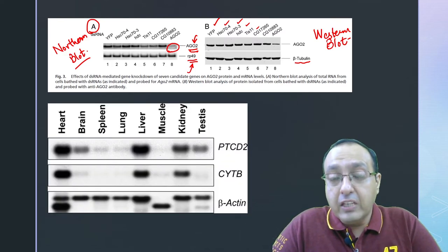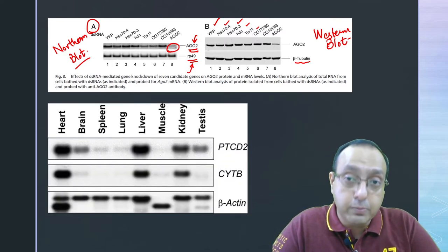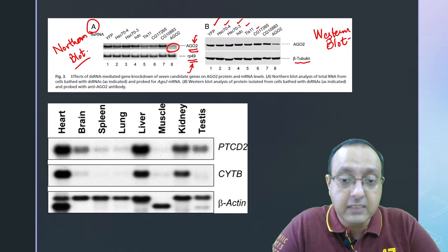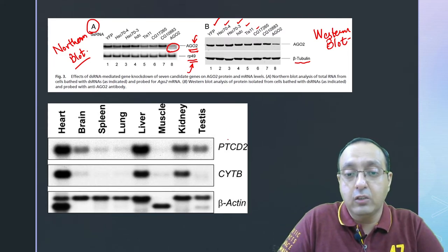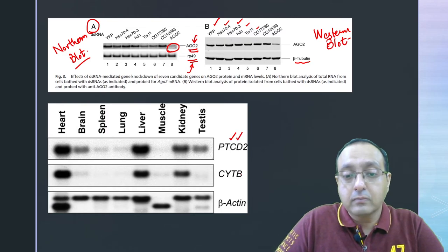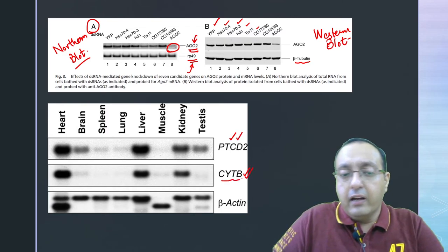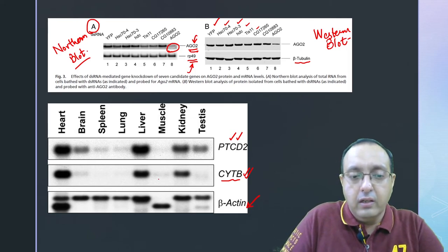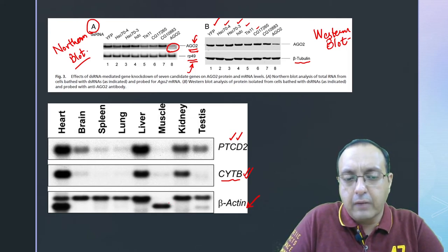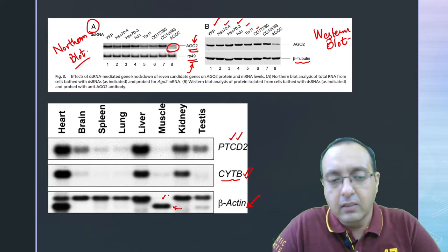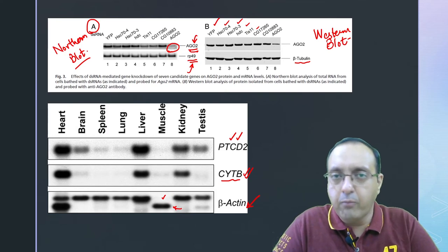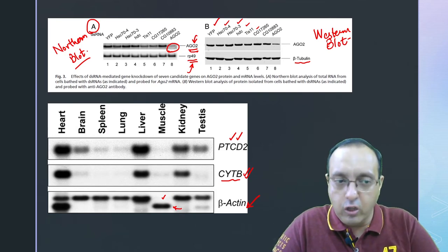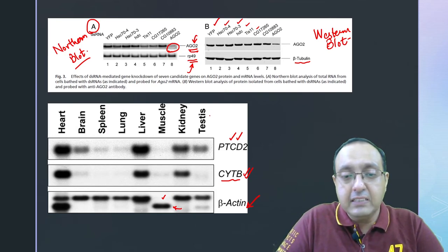Another application of Northern blot is to check tissue-specific expression of different mRNAs. For example, we have this gene called PTCD2 and CYTB. Here is beta actin, which is a housekeeping gene, a loading control. It has different isoforms, so sometimes it gives lower band and sometimes it gives a higher band. The main important thing is it is present in all the wells.